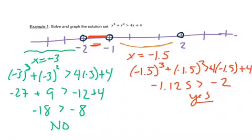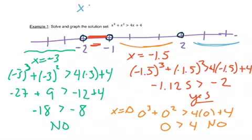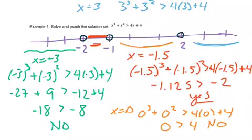Now I want to choose something between negative 1 and 2, so 0 is a nice number — it's usually really easy to work with. So we have 0 cubed plus 0 squared, and we're trying to see, is that bigger than 4 times 0 plus 4? The left side is just 0 and the right side is 4, and that's a no, so we would leave that blank. And then finally, we'd want to choose something over here — let's say maybe 3. So I would check 3 cubed plus 3 squared, and I want to see, is that bigger than 4 times 3 plus 4? The left side is 36 and the right side is 16, so that's a yes. So we'd want to shade this direction.